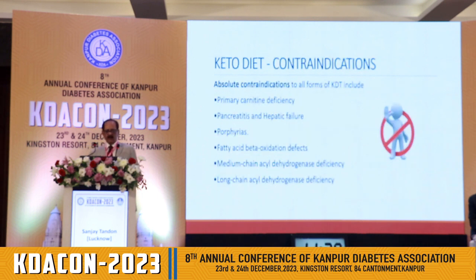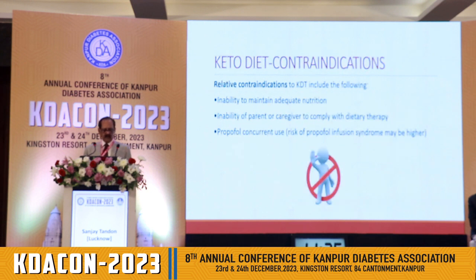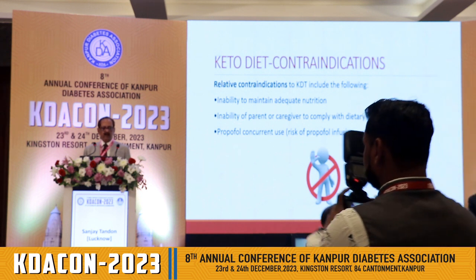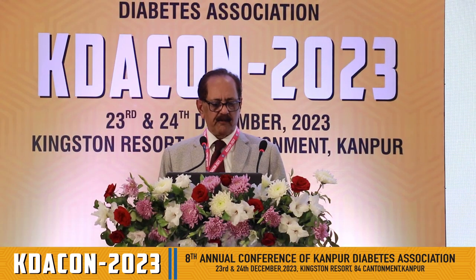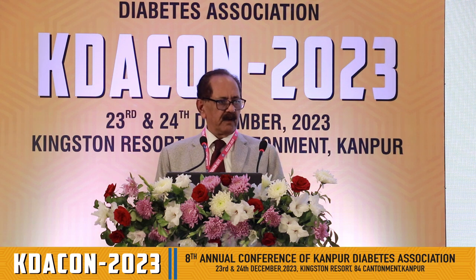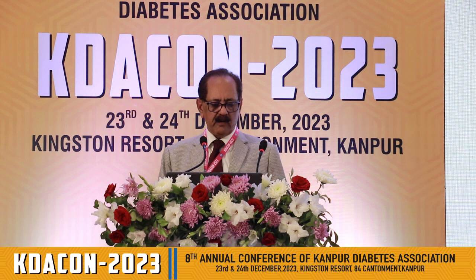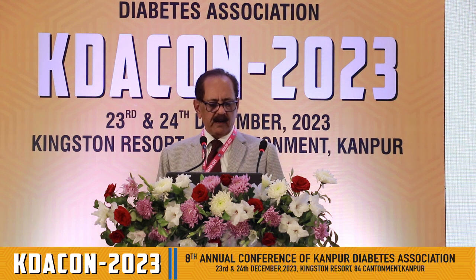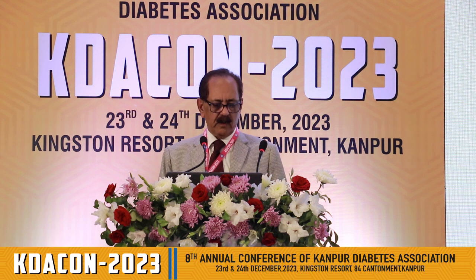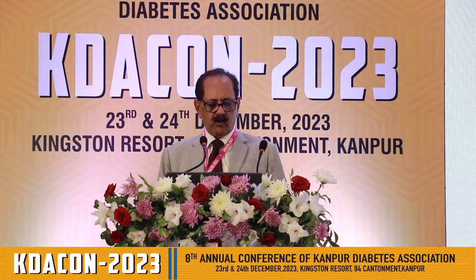Absolute contraindications to keto diet include primary carnitine deficiency, pancreatitis, hepatic failure, renal failure, and different fat metabolism defects. Relative contraindications include inability to maintain adequate nutrition and inability of parents or caregivers to comply with dietary requirements. KD eating patterns restrict carbohydrate intake to less than 50 grams to induce ketosis, while increasing protein and fat. Carbohydrate deprivation leads to increased circulating ketone bodies by breaking down fatty acids and ketogenic amino acids, providing an alternative energy source that alters physiological adaptations.